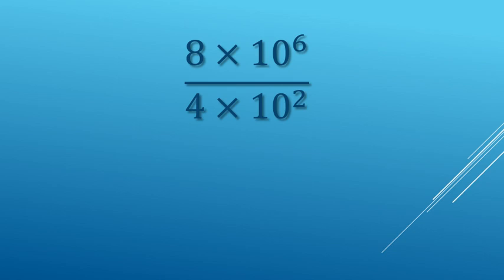Now dividing scientific notation. Let's start with the numbers. That's going to be an 8 and a 4. We are dividing them, makes 2. Next up is the powers, 10 to the 6th divided by 10 squared is going to be 10 to the 4th power.